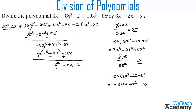Now let us divide the first term of the new dividend, x², by the first term of the divisor, 3x². We get x² divided by 3x². The x² in the numerator and denominator cancel, giving 1/3 as the last term of the quotient.